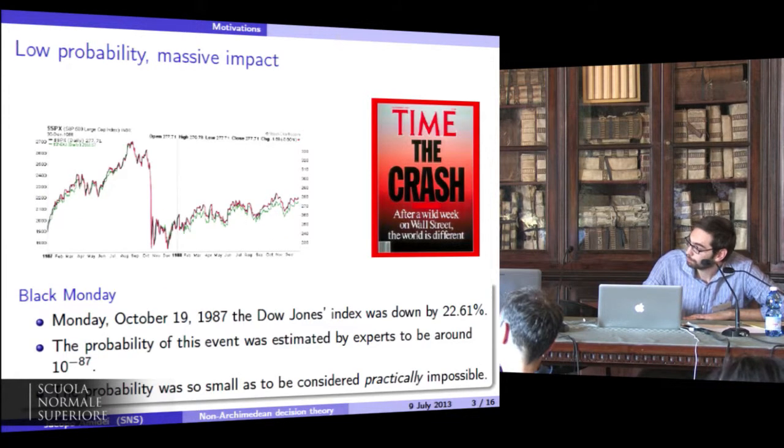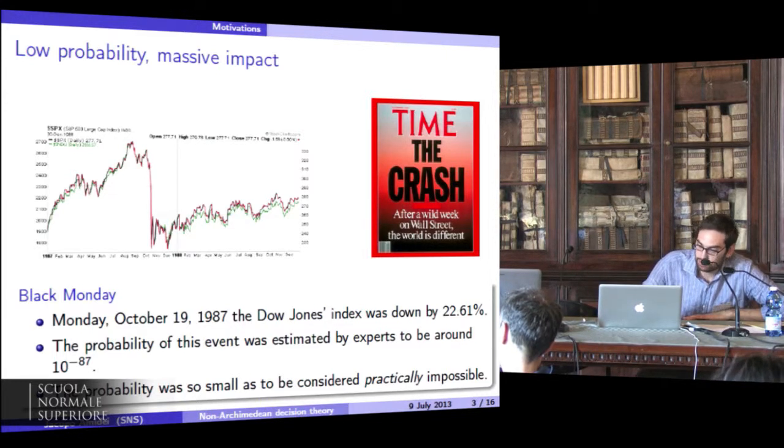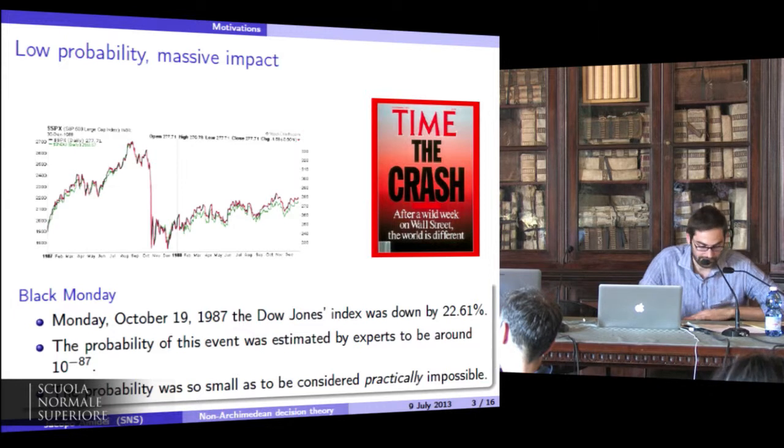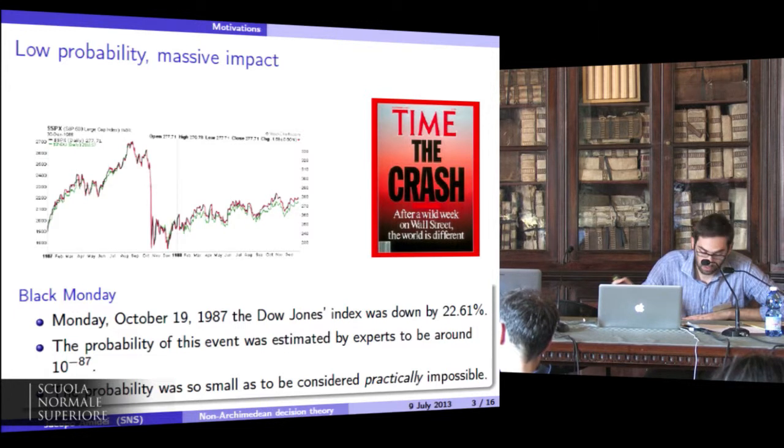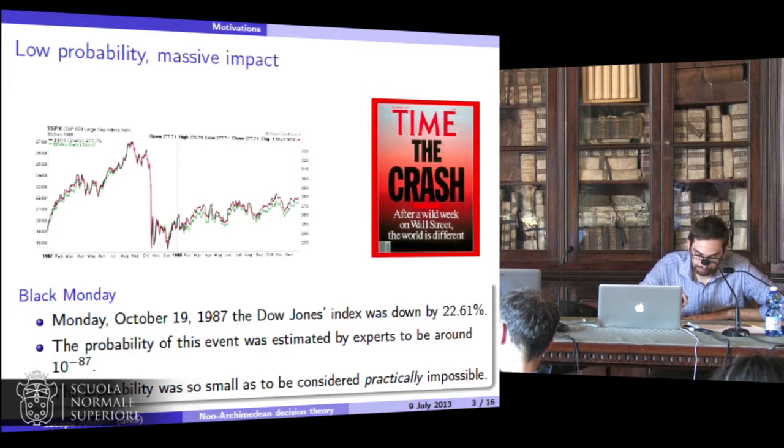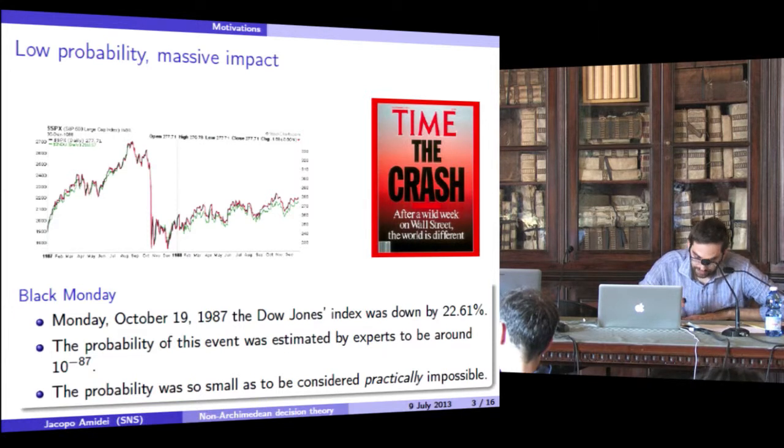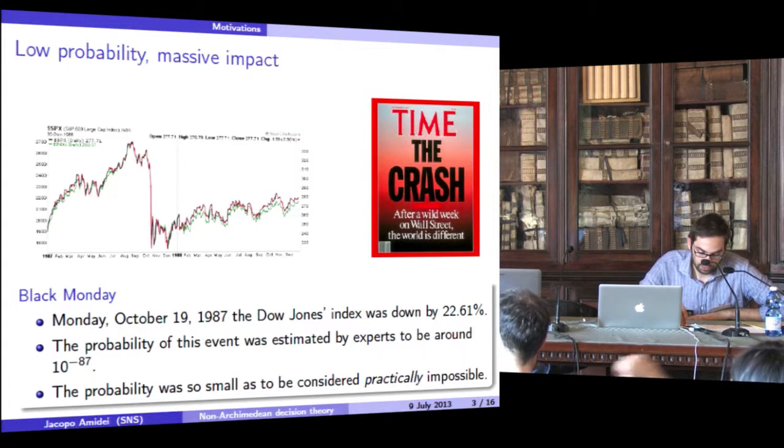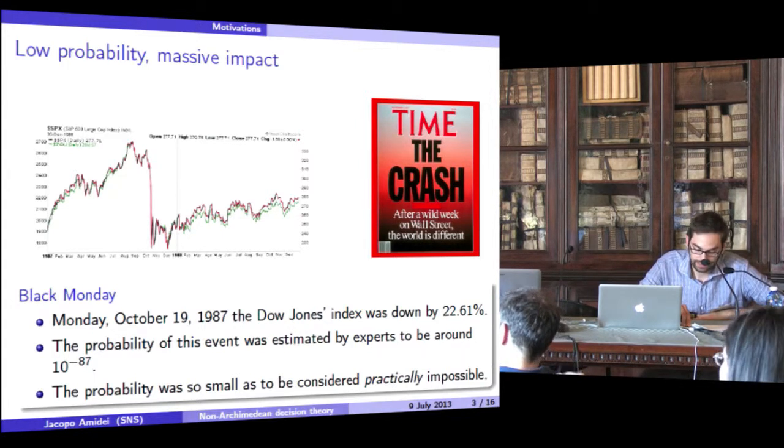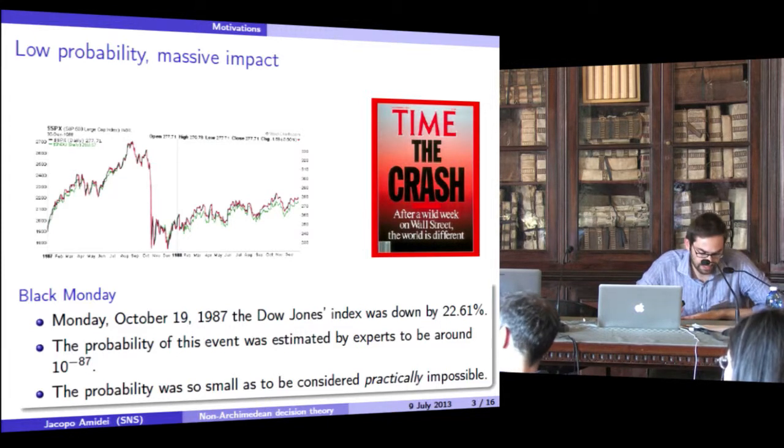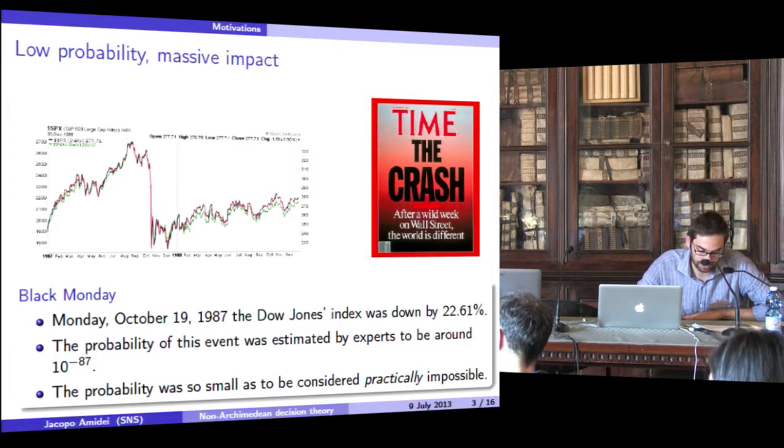The values at stake are very high. For example, on Monday, October 1987, the Dow Jones Index was down by 22.61%. This crash, as described in the November cover of Time magazine, was of historic proportions. Consider that the Dow Jones lost almost a quarter of its value in a single day, and this is the largest daily percentage loss in history.